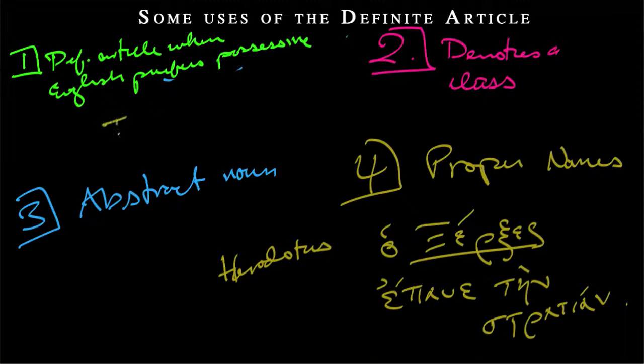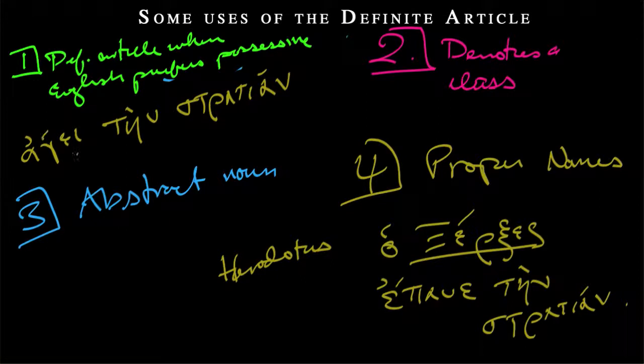So, four uses of the definite article that are a little bit off from English. So the possessive, we've seen that now a few times with tain stration. On the one hand, it could just be the army, but it could be his, her, etc. Then we have denoting a class, where we have hoi sophoi, maybe, the wise men. Wise people, wise men say only fools rush in, hoi sophoi say only fools rush in, that sort of thing.